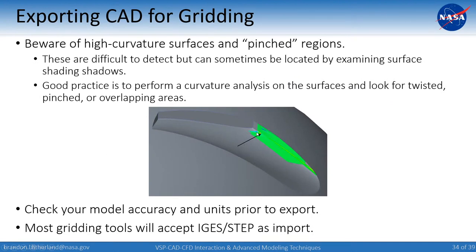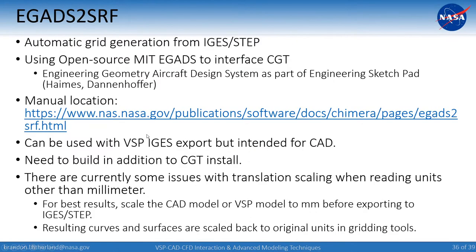When going from CAD into grid tools, watch out for pinched regions and high-curvature areas — do a surface analysis to identify them and improve your exports. For the grid system for these high-lift propeller blades and nacelles, I used a feature of Chimera Grid Tools called EGADs-to-Surf, which is part of the open-source MIT EGADs library and the Engineering Sketch Pad design system. This allowed importing CAD and adding it to things already in place from OpenVSP.